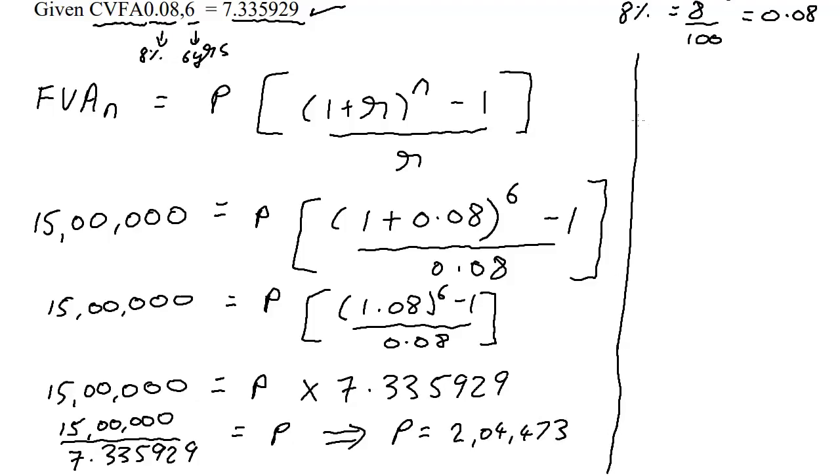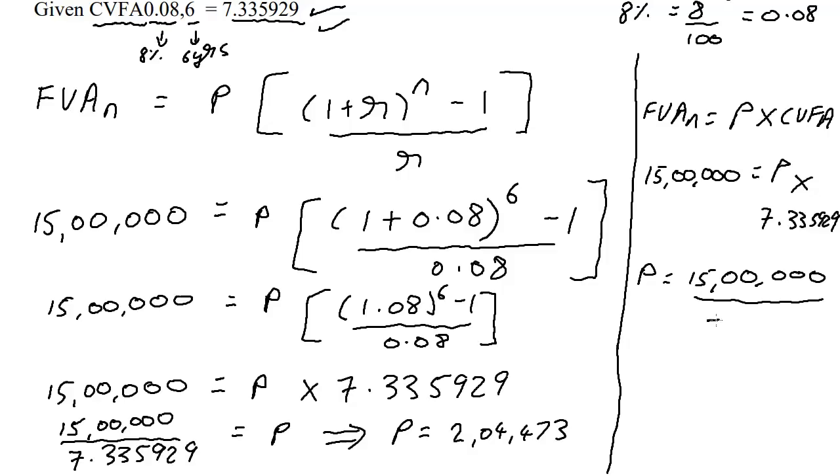Now the simpler method, assuming that we've been given this, I can simply write that the future value annuity is equal to P multiplied by the CVFA. And I know that the future value annuity is equal to 15 lakhs, and I know that the CVFA is 7.335929. And therefore I know P is going to be equal to 15 lakhs upon 7.335929.